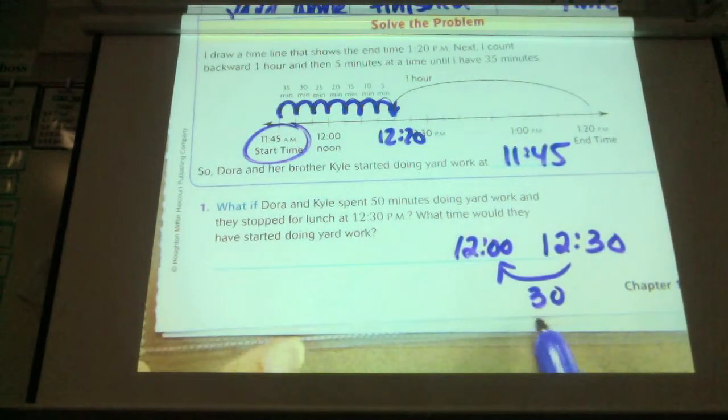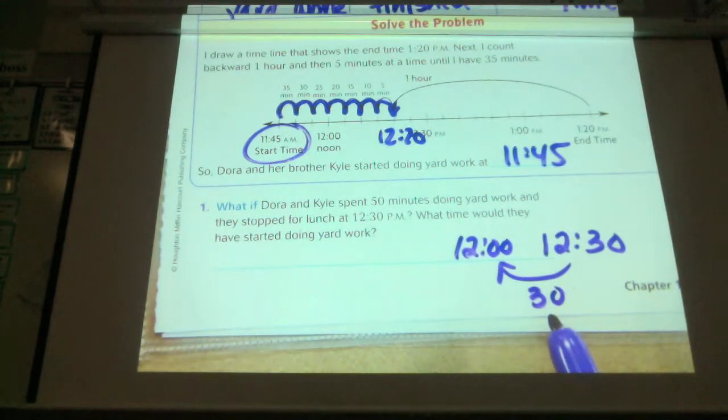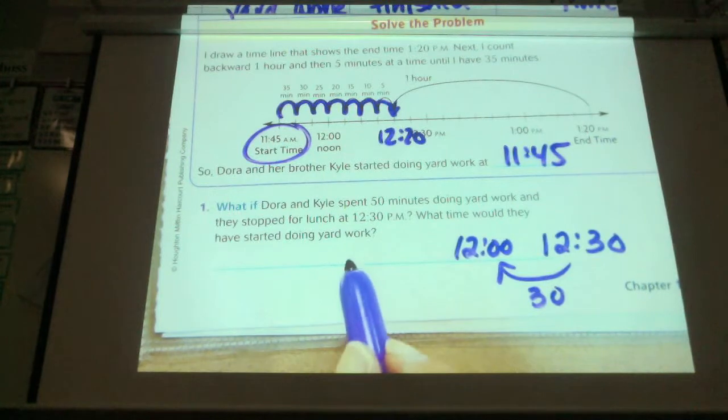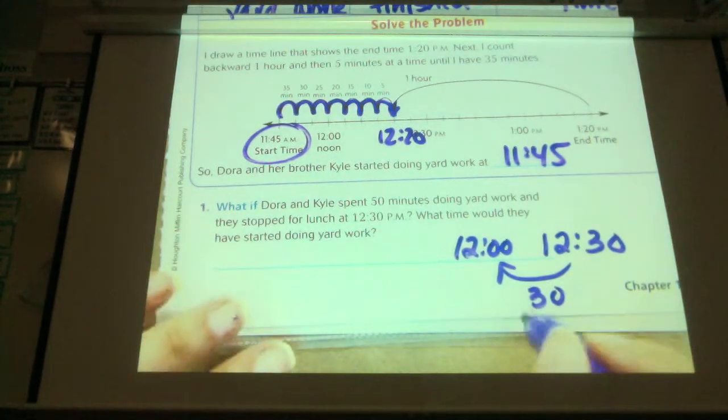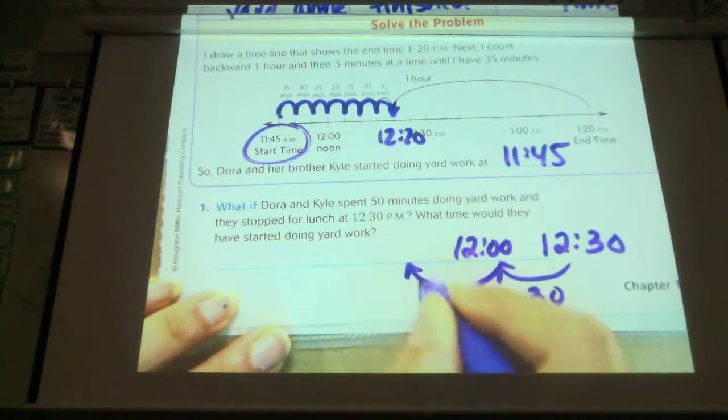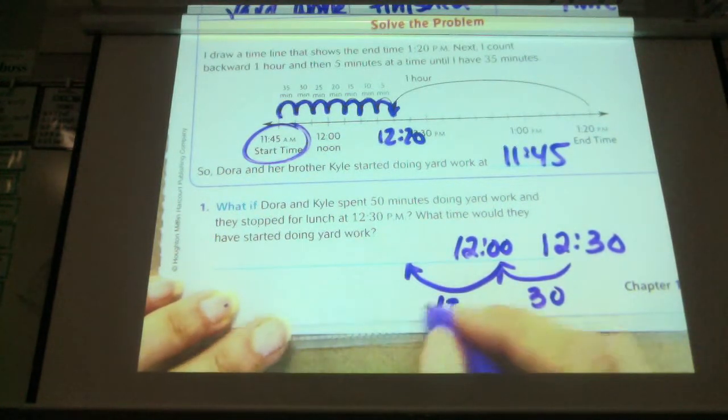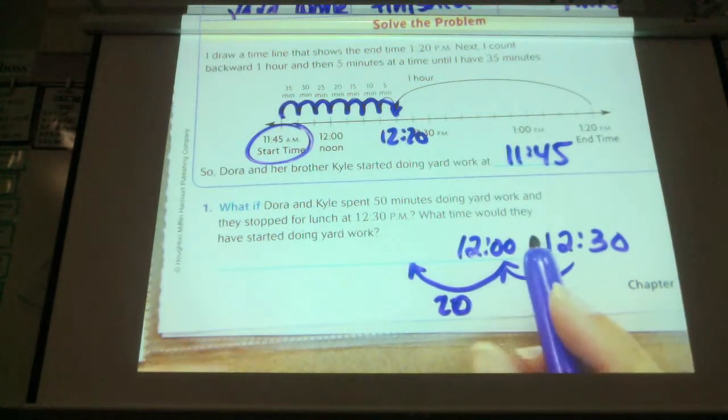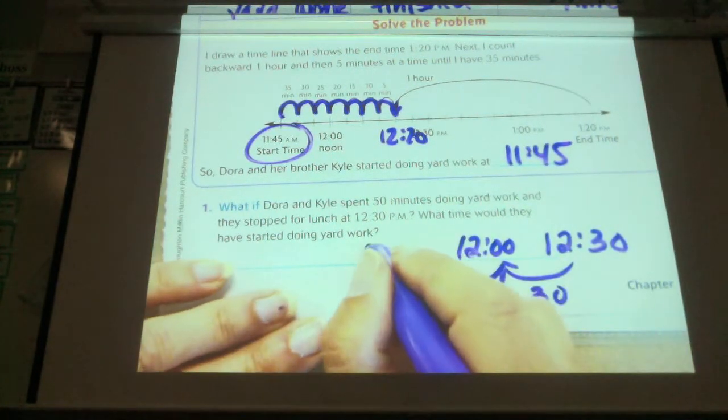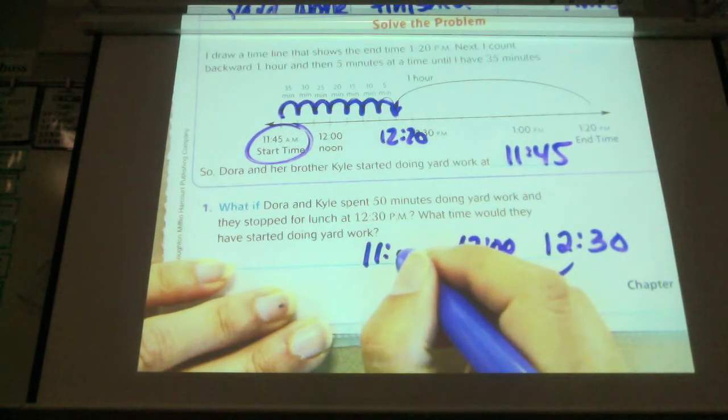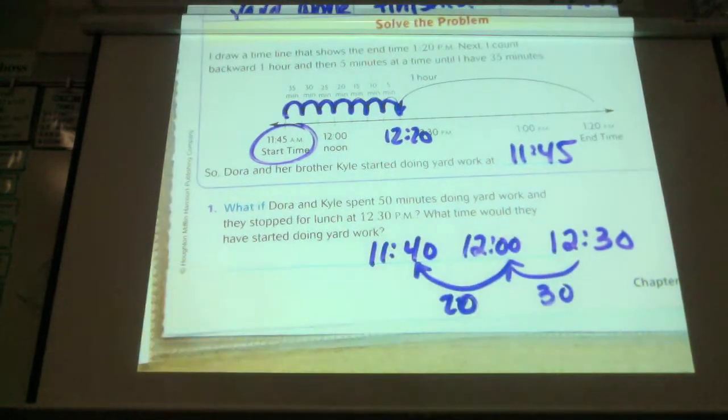And in my head, what I would do is I would say 12:30 minus 30 minutes is 12 o'clock. And do I have 50 minutes back yet? No. So I'm going to do how much more? Probably 20 minutes. So I need to do 20 more minutes back. And 12 o'clock minus 20 minutes. I can look at the clock. An hour minus 20 minutes is 40 minutes. So 11:40.